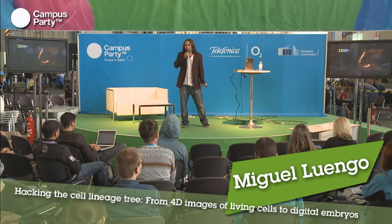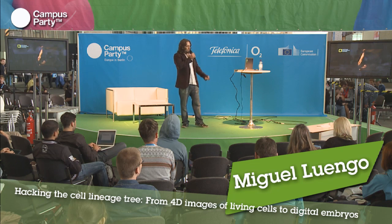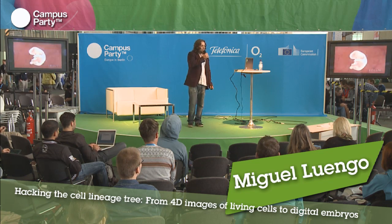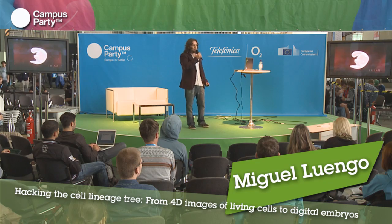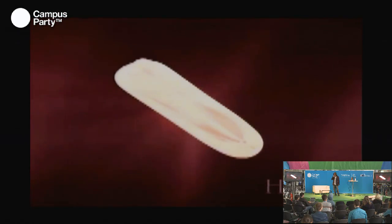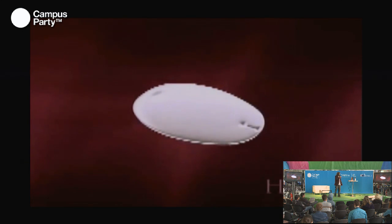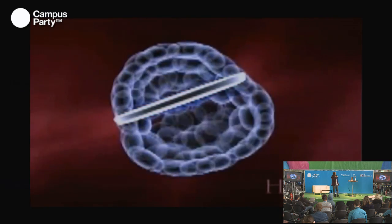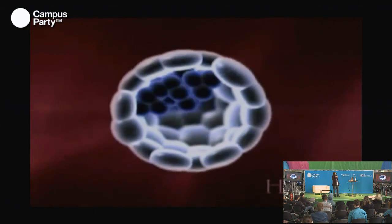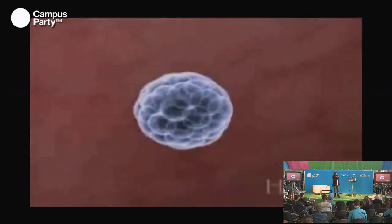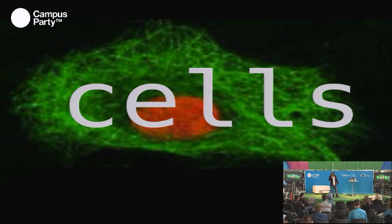No matter who we are, we all came from a bunch of cells. At the beginning we are all the same. Here we are seeing nine months of development in about 30 seconds — a reverse view of how a human embryo develops. At the end we are a bunch of cells, and this outlier cluster is the placenta. Before that, we all know the story.